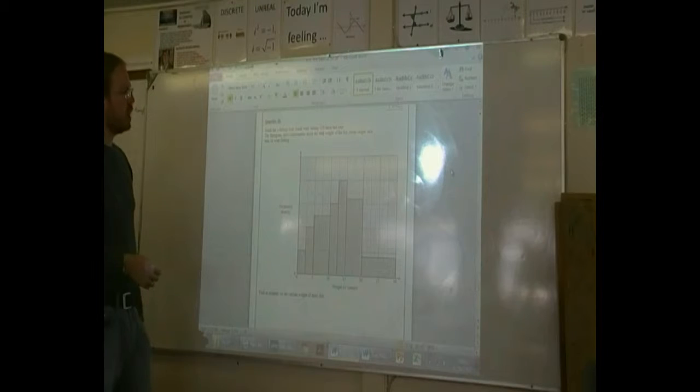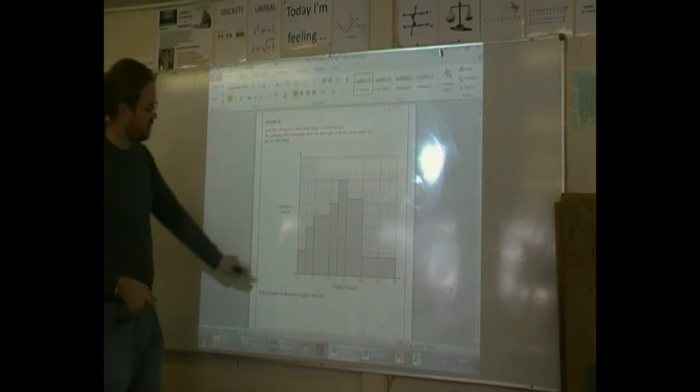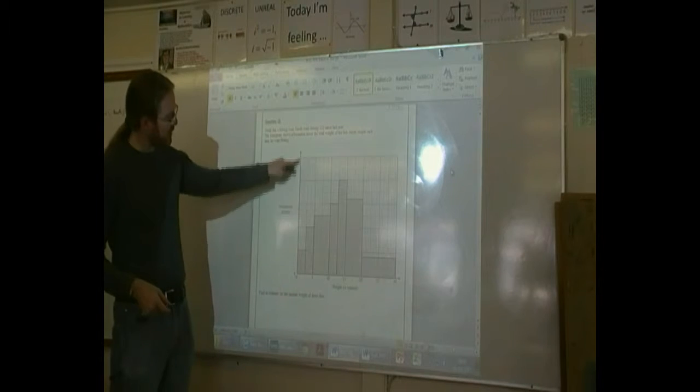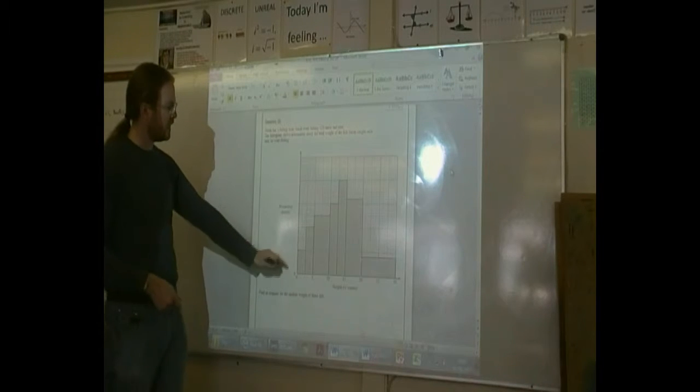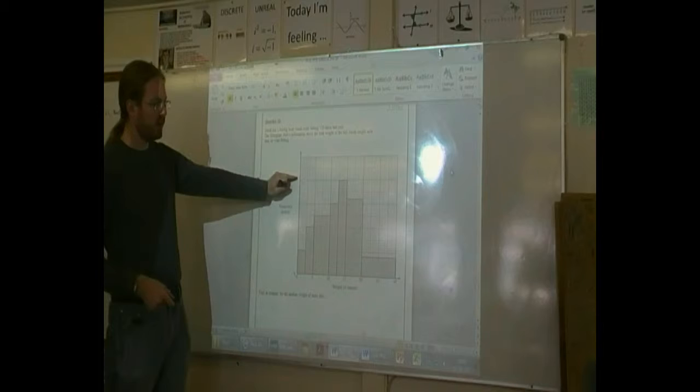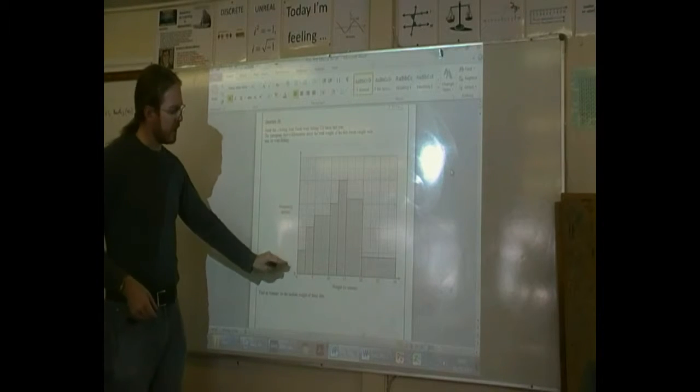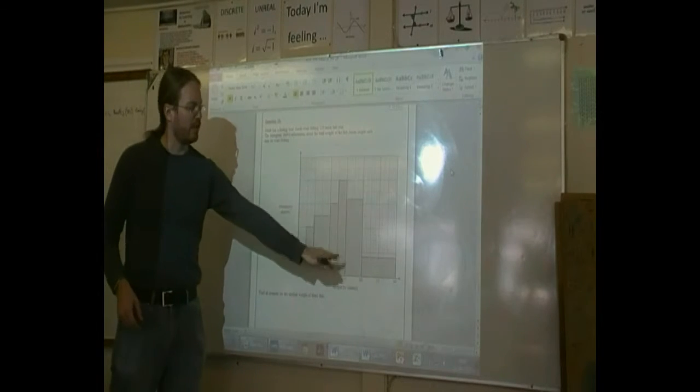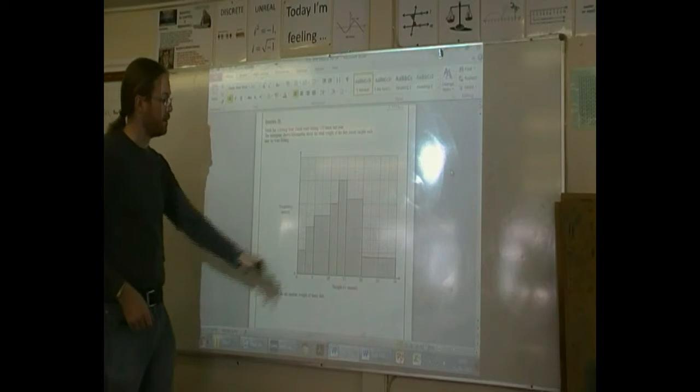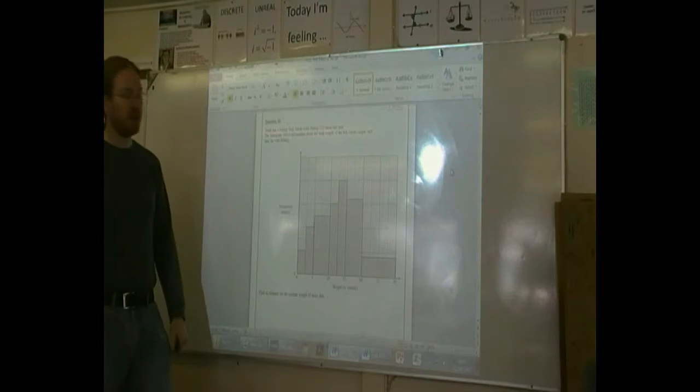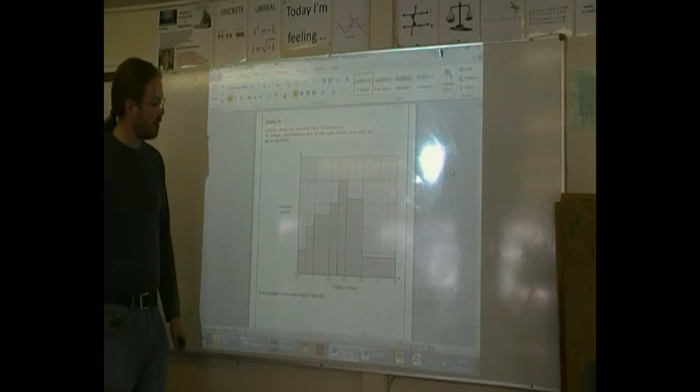Jonah had a fishing boat and he went fishing 123 times last year. You notice that this is the frequency density, so that doesn't go up to 123. Actually, 123 is represented by the area of the bars all added together. So if we can work out what the area is, then that will allow us to answer the question.